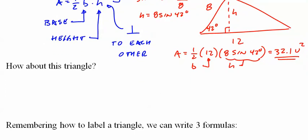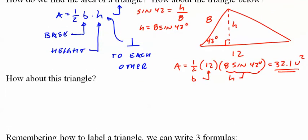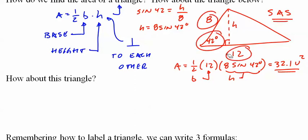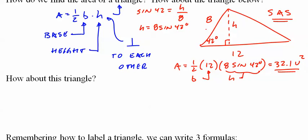We call this triangle configuration side-angle-side (SAS). For side-angle-side, if we're given two sides and the angle between them, we just multiply: side times side times sine of the angle to get the height and then the area.